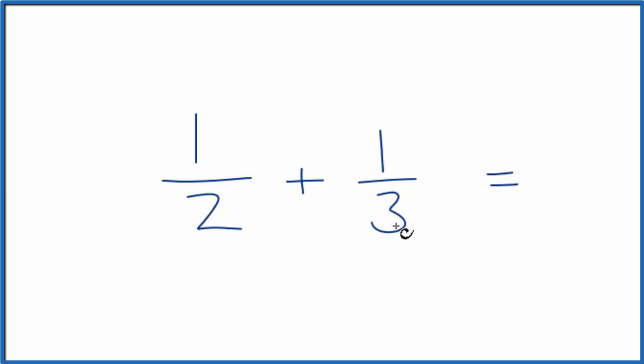What we could do is we could take three. We could multiply one-half by three over three. Then we could take two, multiply one-third by two over two. So we're really not changing anything. Three over three, three divided by three is one. So we don't really change the value, just the way it's written. Same here, two over two, just multiplying by one.